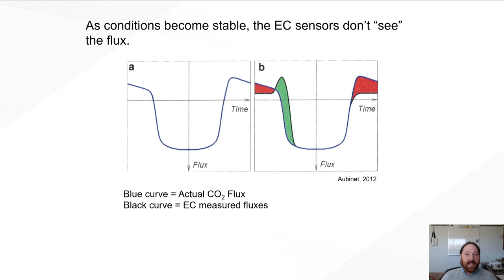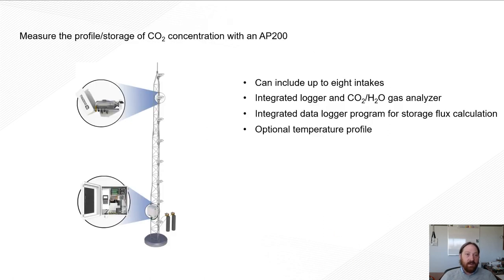And there's things like stratification that decouples the surface and measurement systems, excuse me, growing footprint, horizontal gradients developing, non-stationarity conditions happening. So there's other things happening at night that makes measuring flux at night difficult. So instead of that, we could quantify the storage with something like the AP200 profile. This can include up to eight intakes. It integrates the logger and a CO2 H2O gas analyzer. And it integrates a data logger program that gives us our storage flux. You can also add an optional temperature profile.